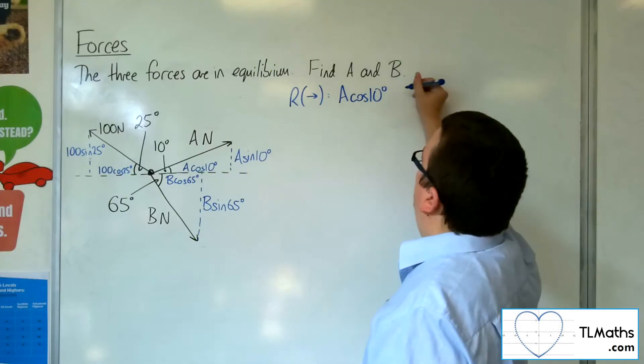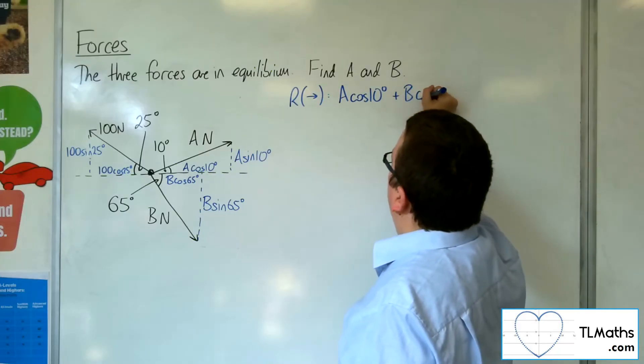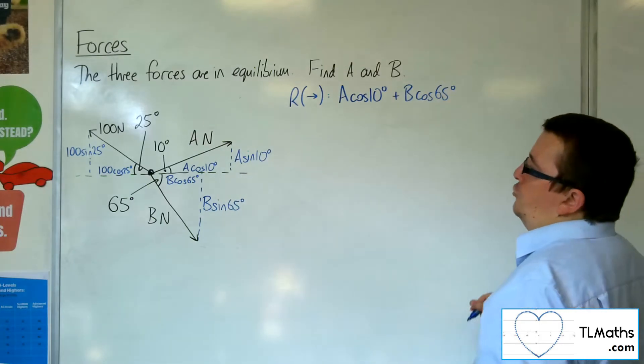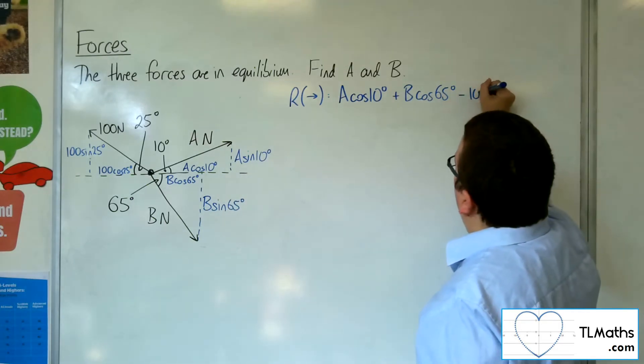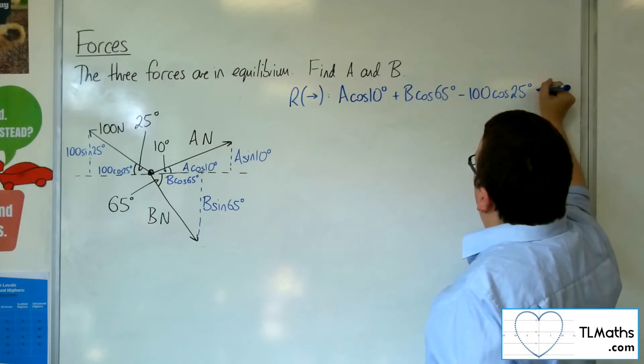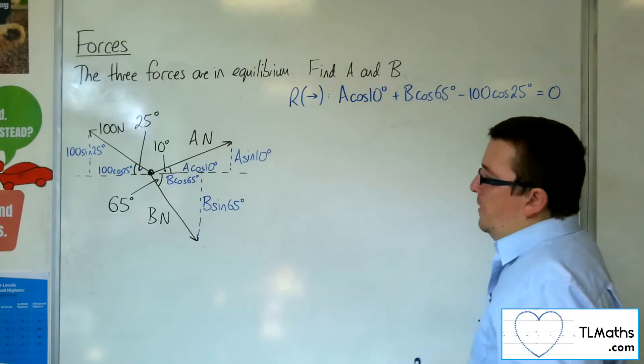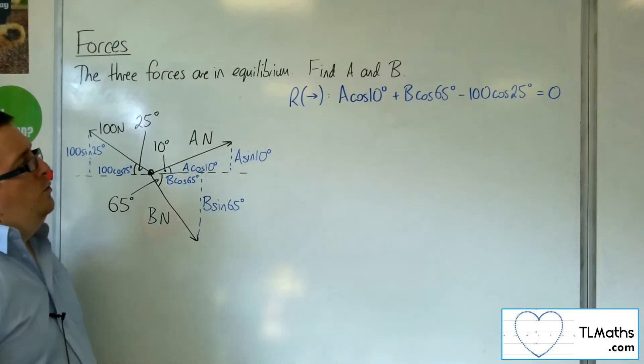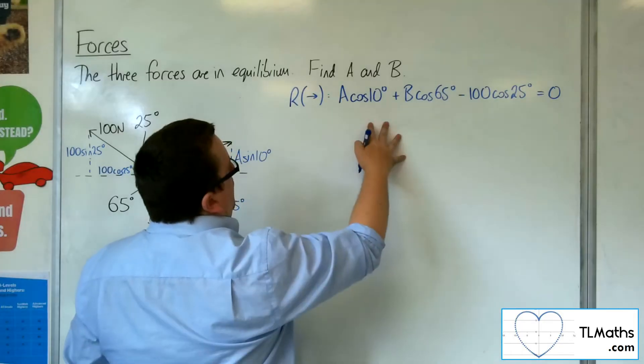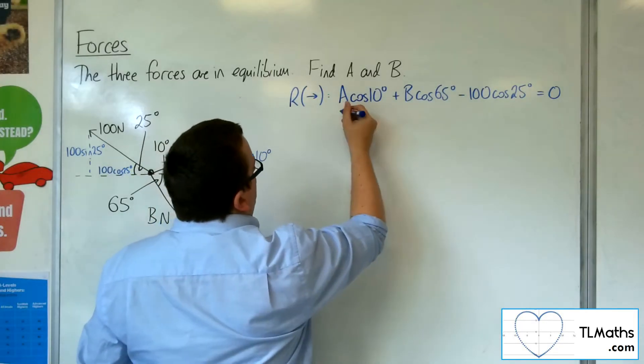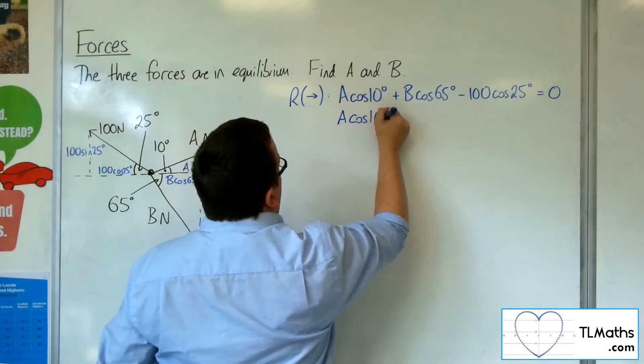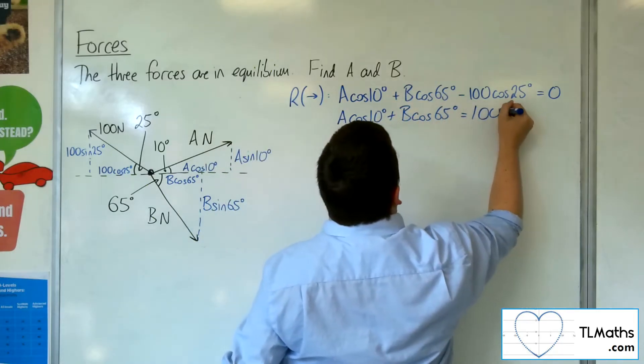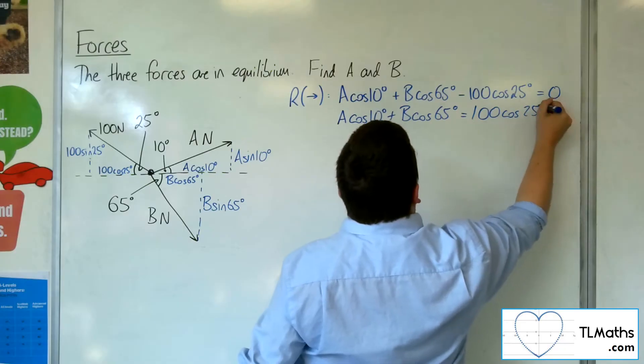So I've got the A cos 10. I've got the B cos 65. And what I'm working against me is this 100 cos 25. They've all got to combine to make 0. So I'm going to rewrite that as A cos 10 plus B cos 65 equals 100 cos 25 for the moment.